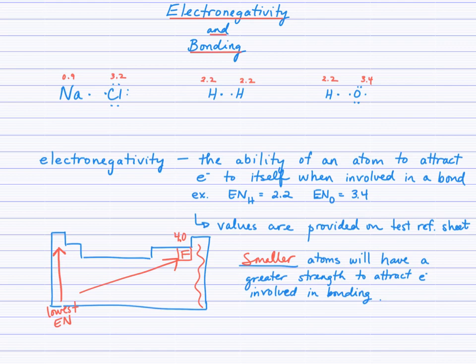Chlorine at 3.2 is close to that 4.0, whereas oxygen is a little further away, and sodium at 0.9 is much lower. Remember, this electronegativity value indicates how strong that atom will be in a tug-of-war for electrons between two atoms.